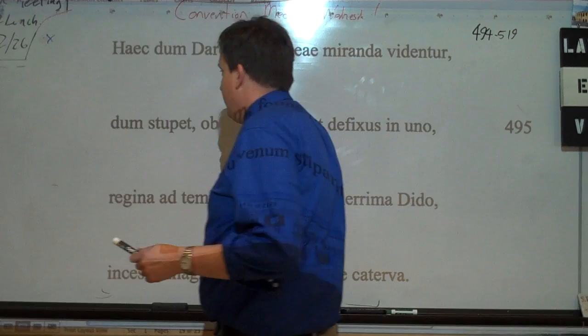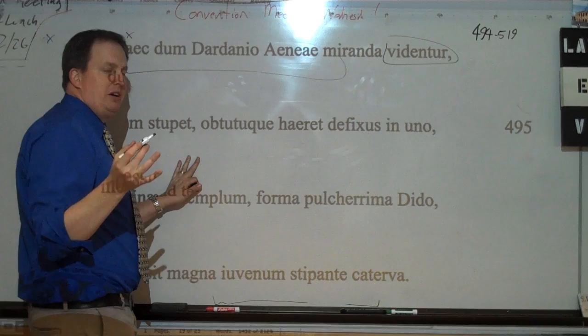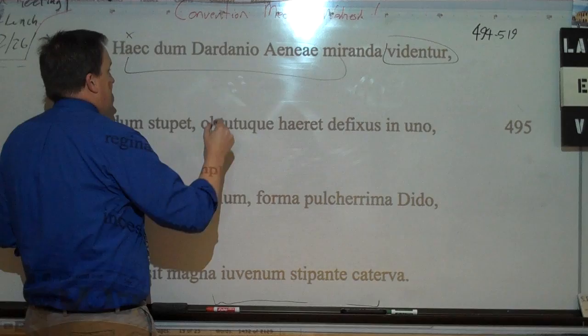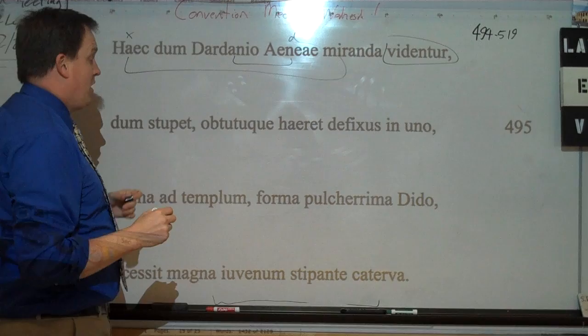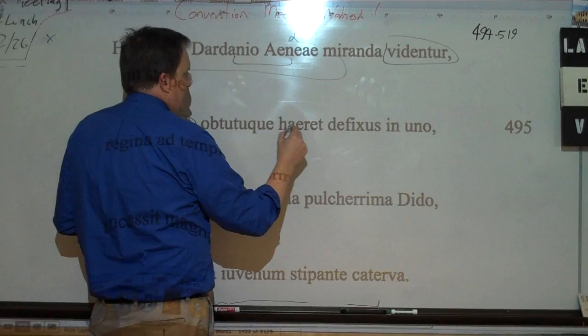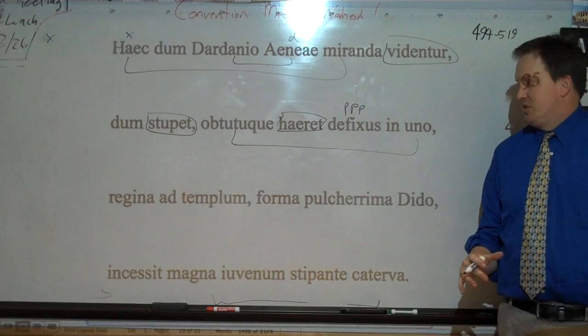Alright, so we start off here while they're looking at the pictures on the wall. Dum, while haec miranda, these marvelous things, with Entor, were being said. I know it's dum, but you translate it imperfectly here, even though it's present. While these things were being watched or were being seen, and then we have a peculiar dative of agent. Often Virgil likes to use these dative of agents by the Dardanian Aeneas. So while these marvelous things were being watched by Dardanian Aeneas, while he stood at the gate, while having been fixed, PPP, he clung in this one view. So he's there, literally like clinging to the view. He's just looking at these images.